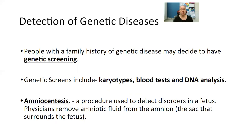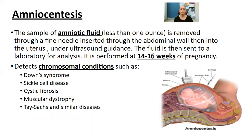If you are pregnant, you might choose to have something called an amniocentesis — a procedure used to detect disorders in a fetus. The physician removes amniotic fluid from the amnion, which is the sac surrounding the fetus. A fine needle is inserted through the abdomen wall and into the uterus under ultrasound guidance, removing less than one ounce of fluid, which is sent to a lab for analysis. This is usually performed at 14 to 16 weeks of pregnancy.